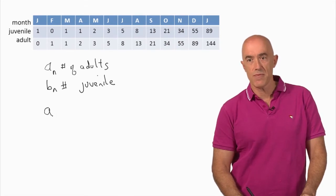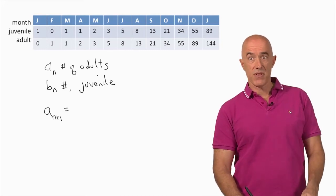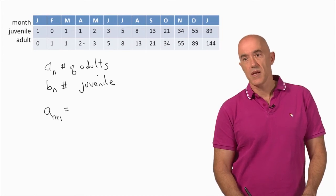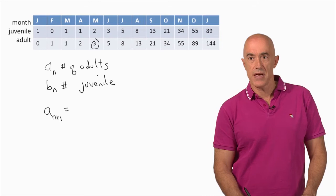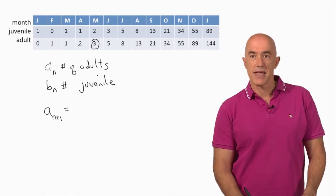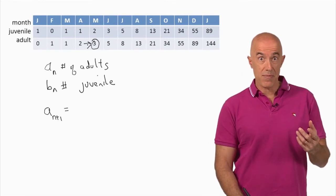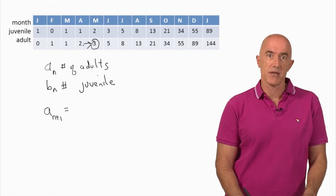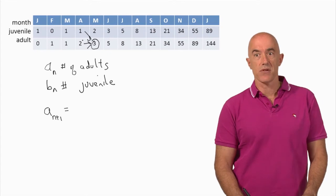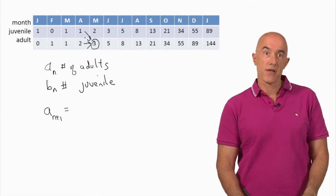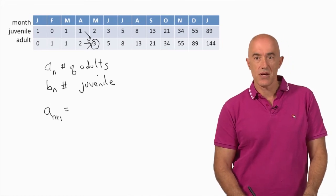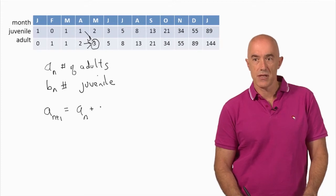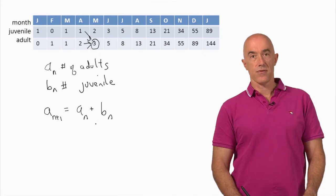The number of adult rabbit pairs in the n plus 1 month — where do they come from? Take this number 3: it came from the two adults in the previous month, because no rabbits die in this Fibonacci population, and also from the juvenile pair, because juveniles after one month mature into adults. So the adults in the n plus 1 month come from the adults in the nth month plus the juveniles in the nth month.